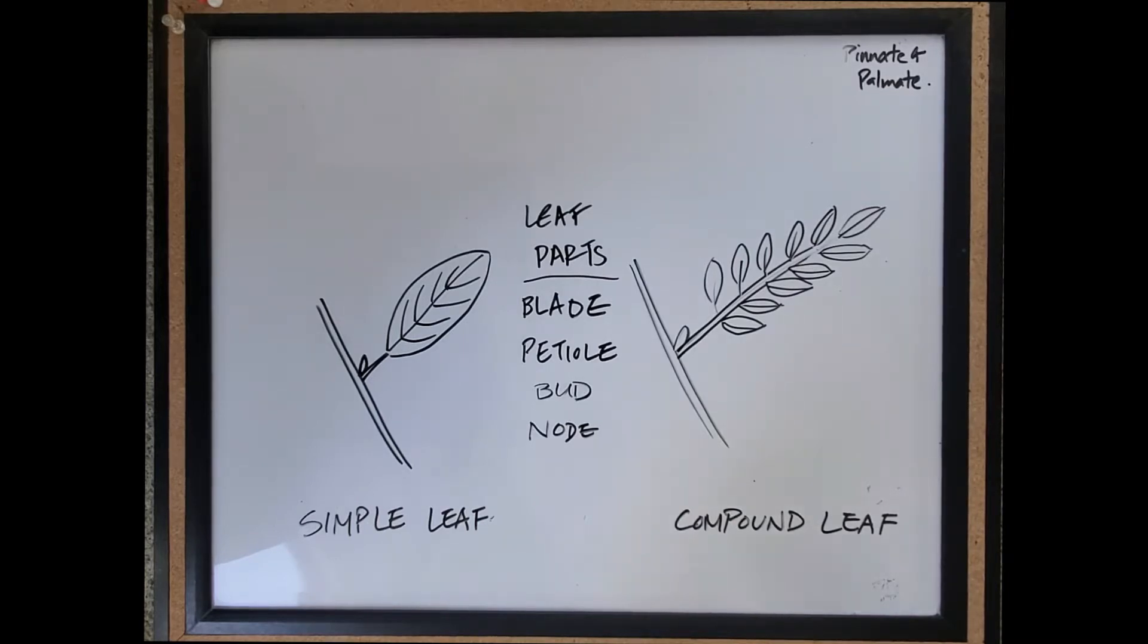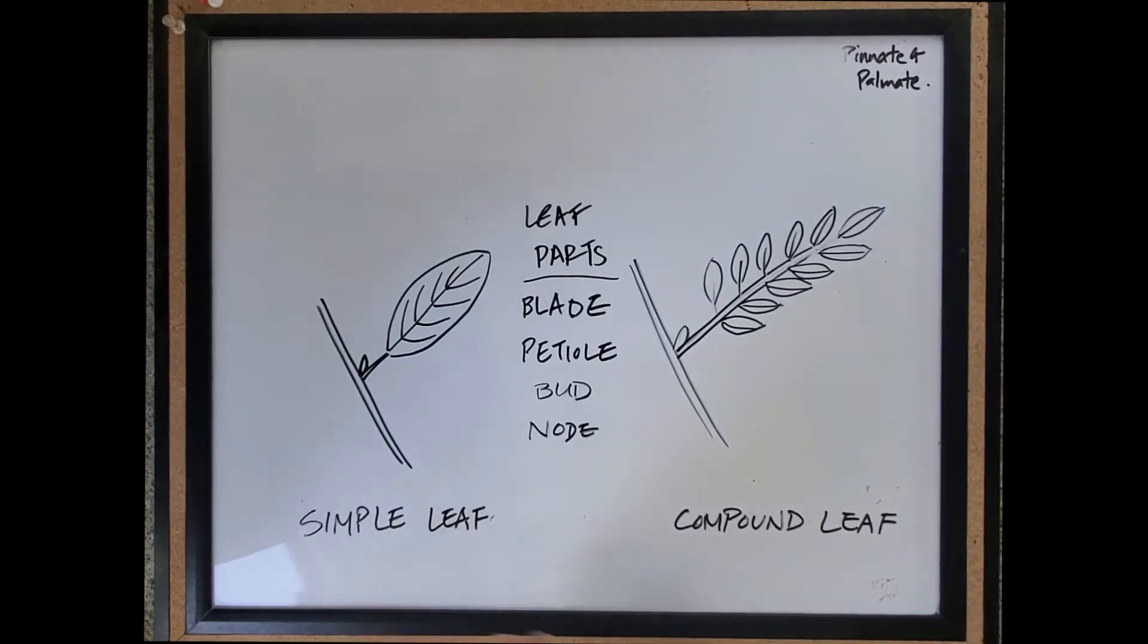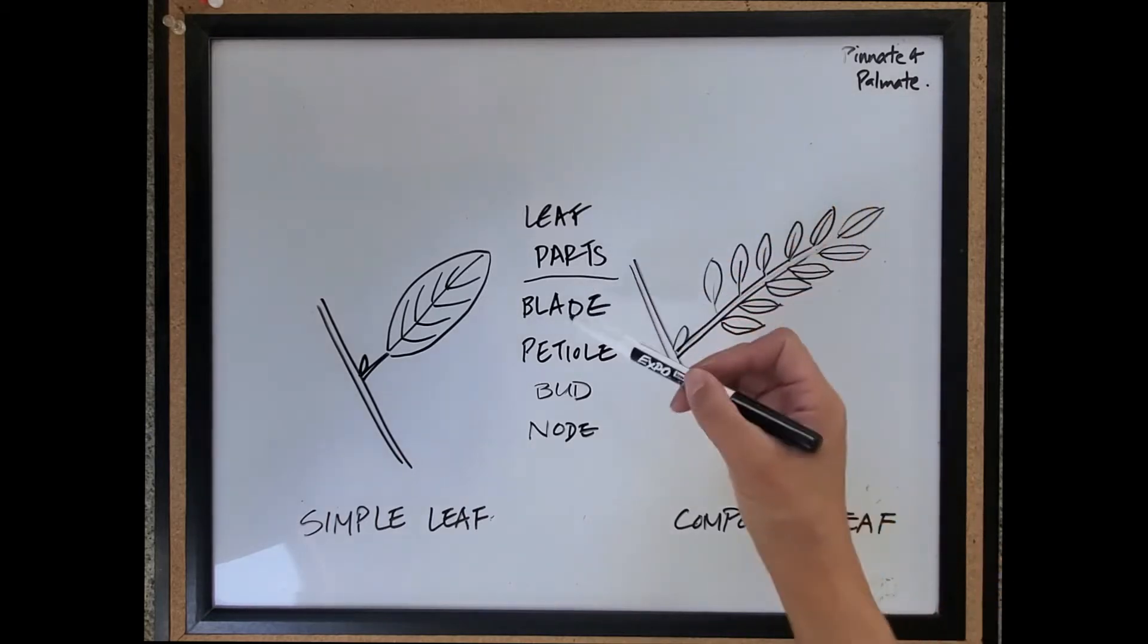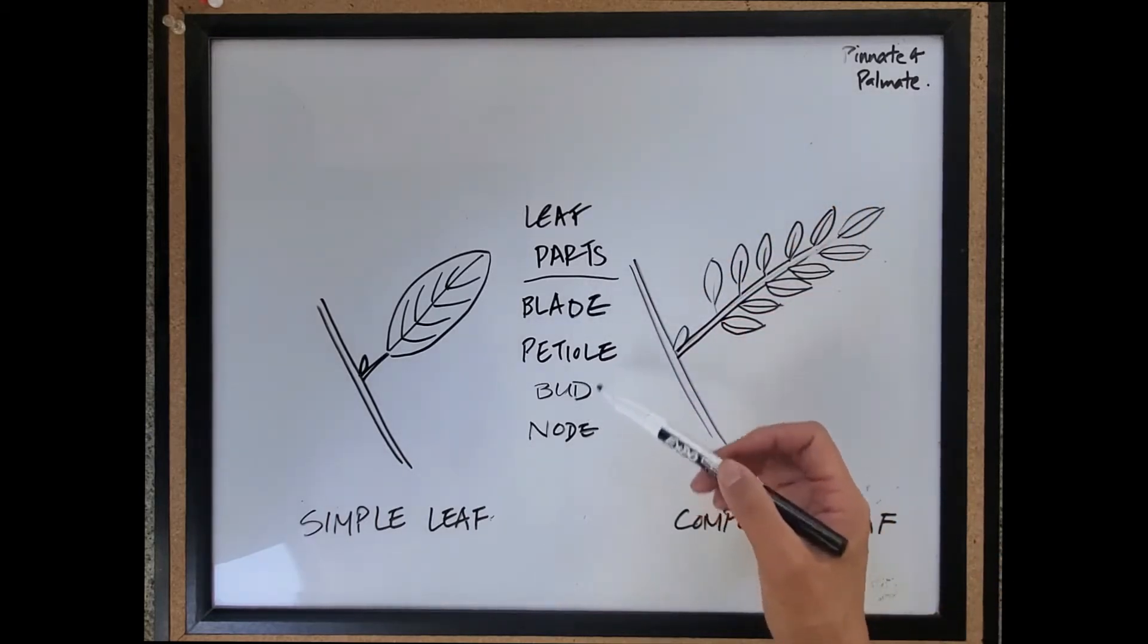As a quick review, we have a simple leaf on this side and a compound leaf on the right. They're going to have the same parts because their anatomy is the same. A leaf is a leaf. So we have these four parts that I want to review.